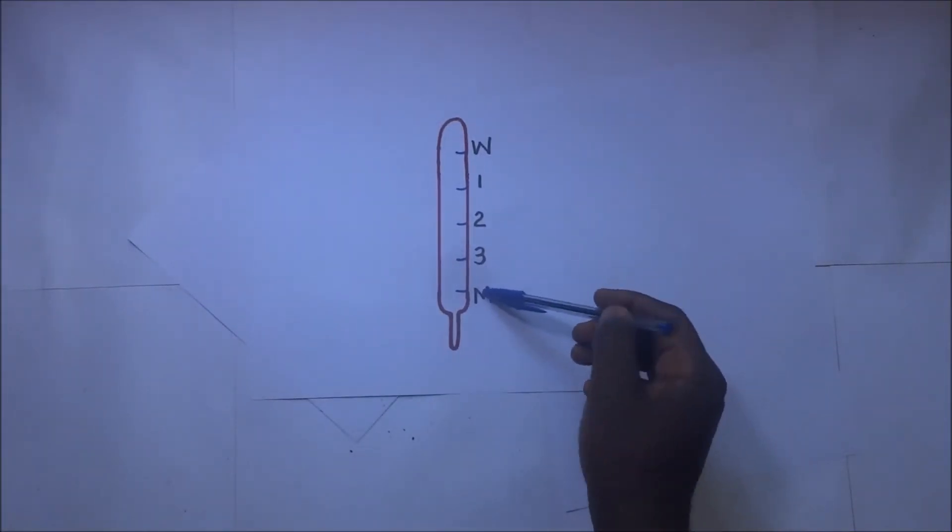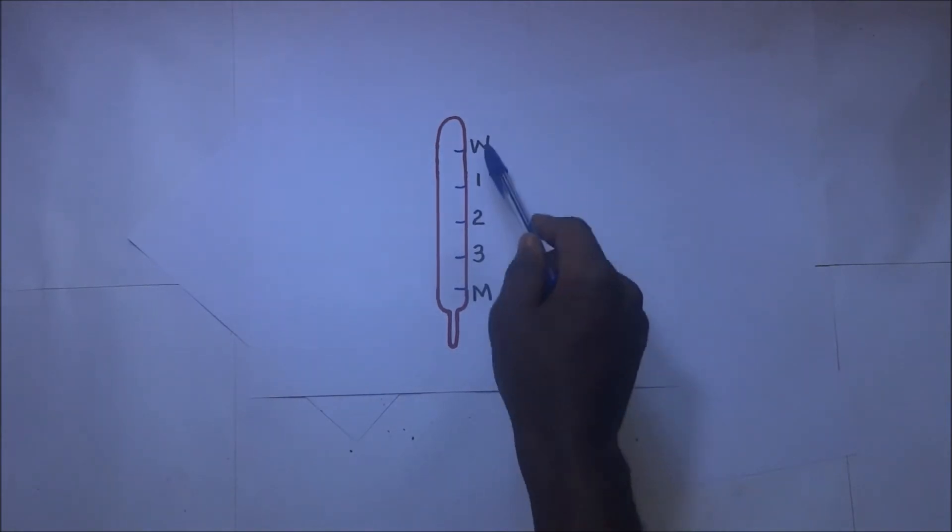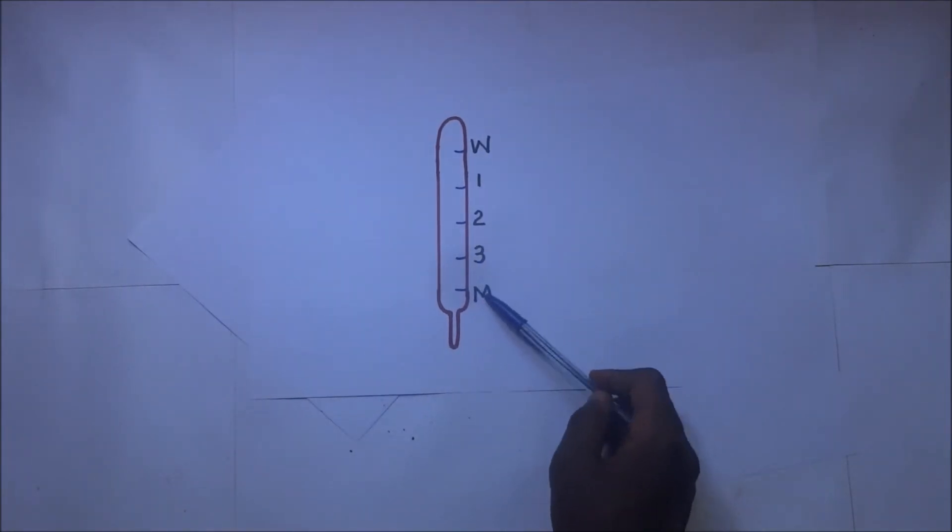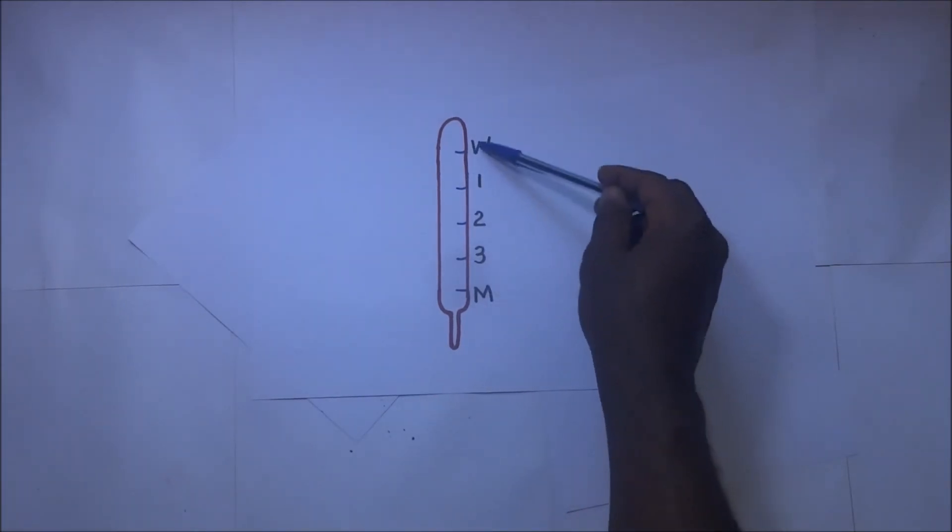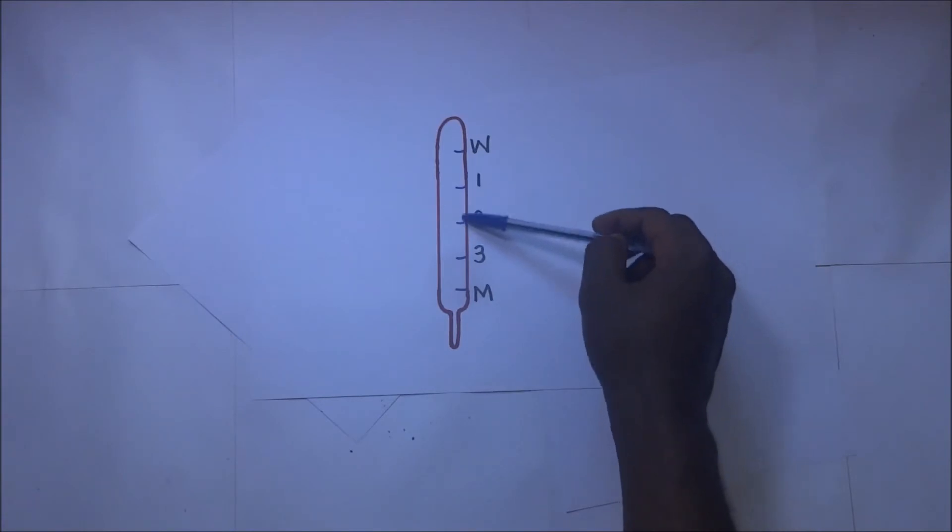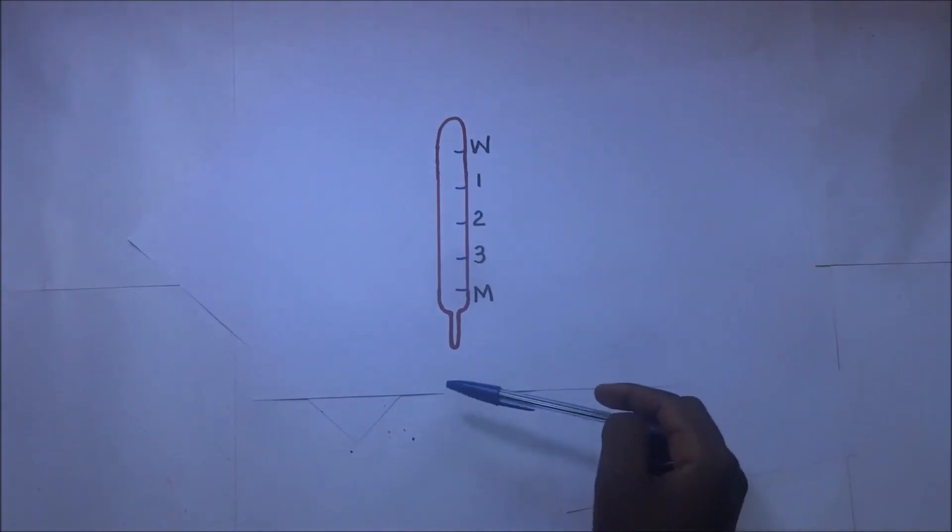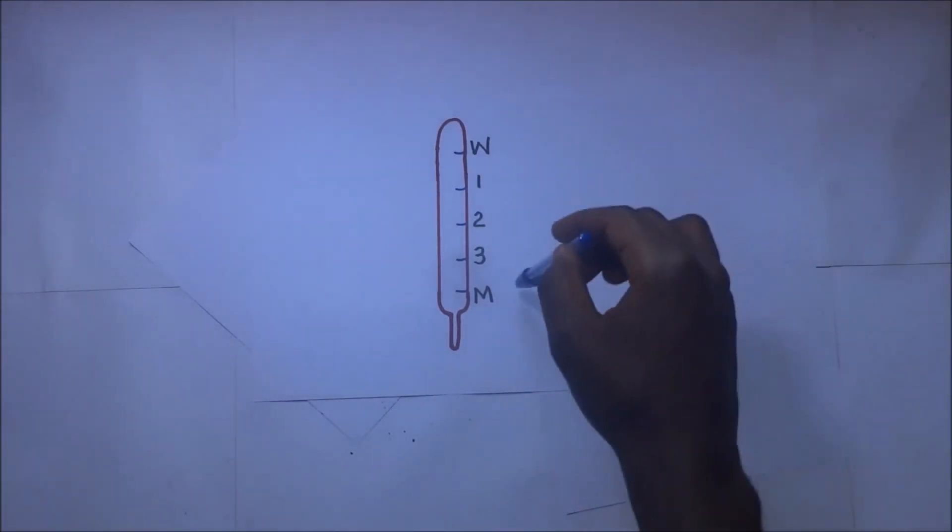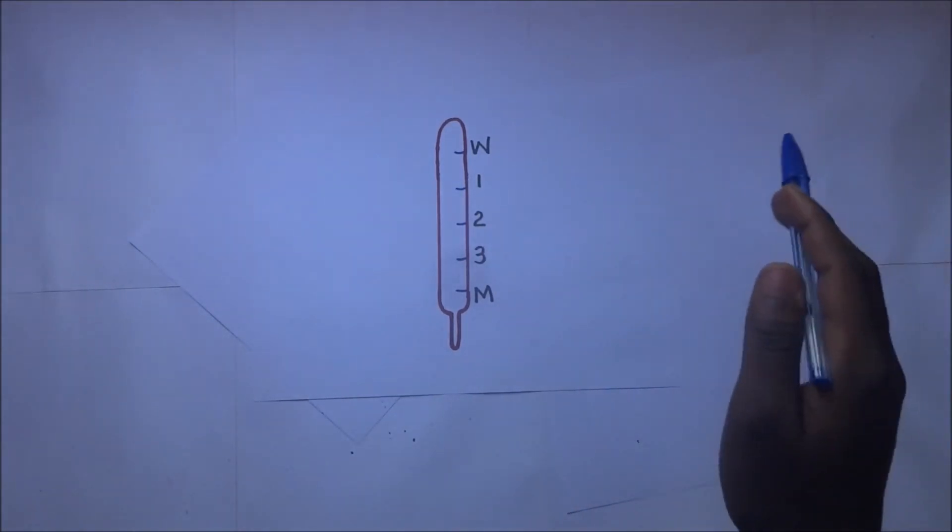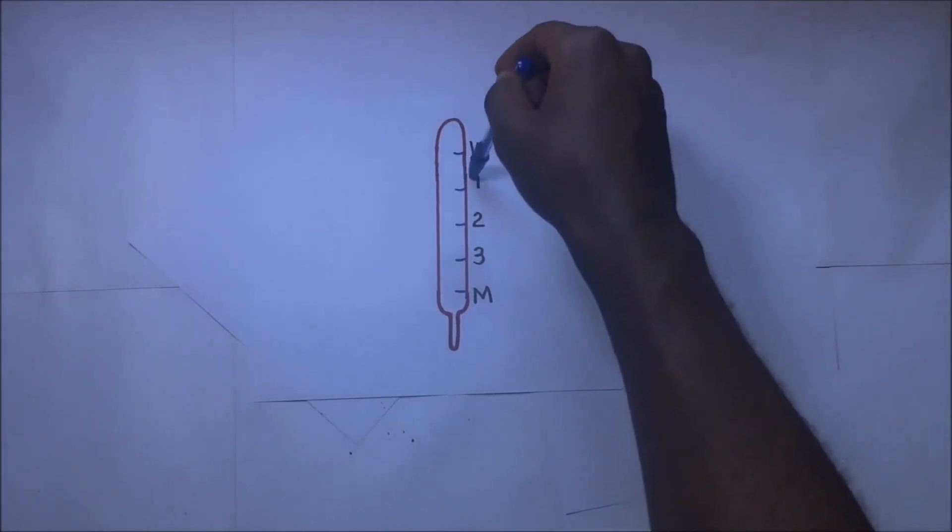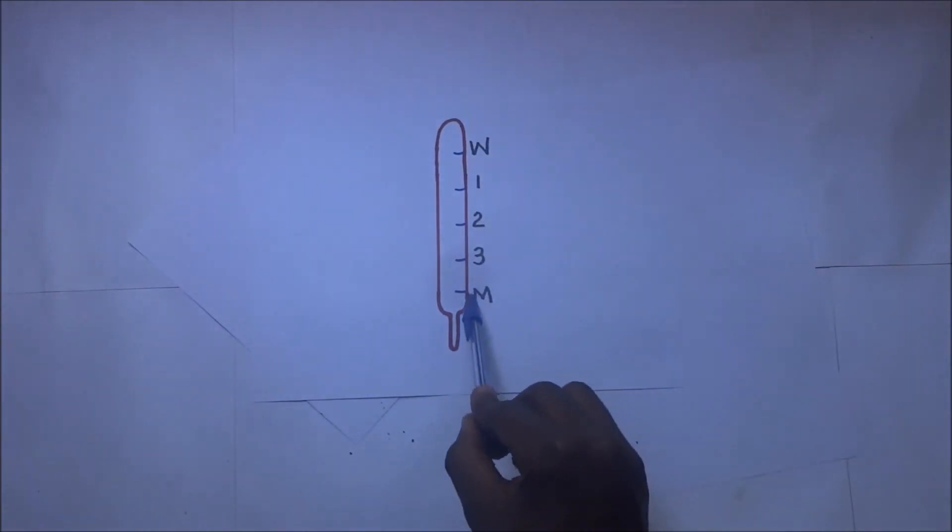If you look at this stem, it is graduated with an M here and W here. M stands for pure milk and W stands for pure water. Between M and W represents the amount of water that has been added to the milk. When I drop this lactometer in milk, it is supposed to sink up to the point M.